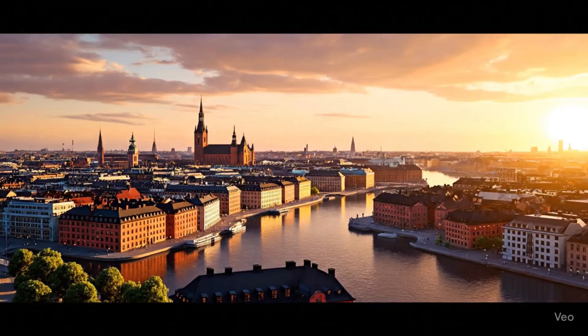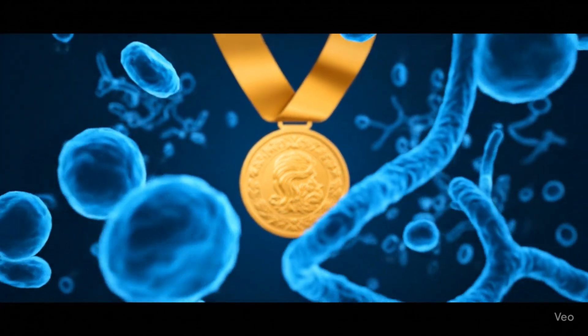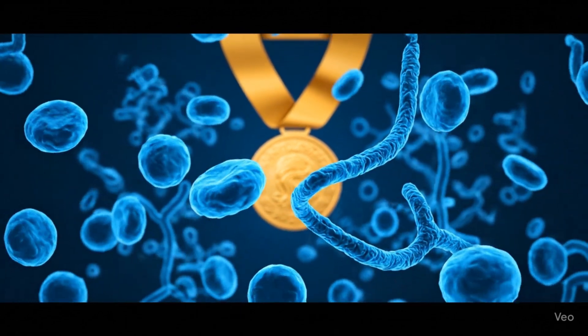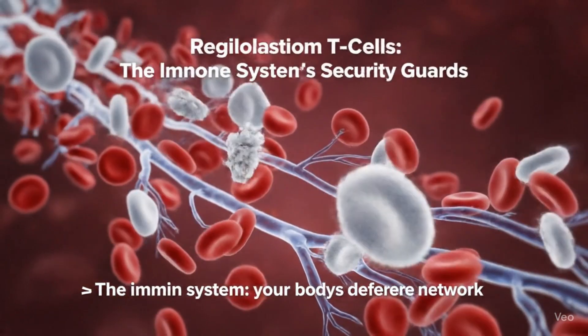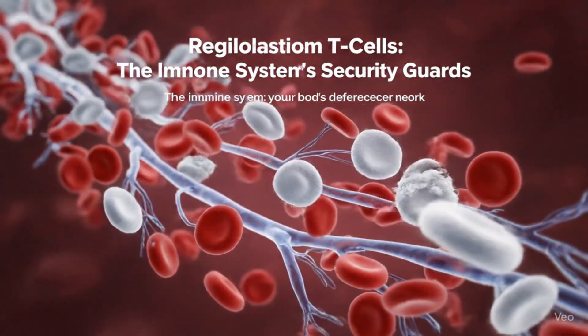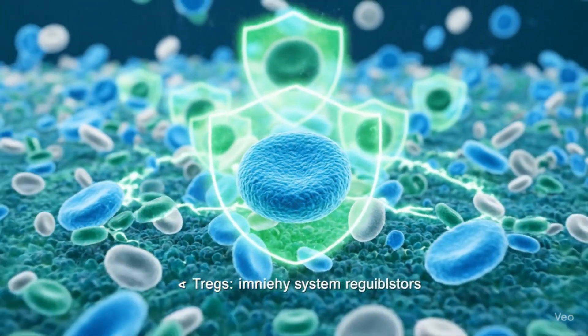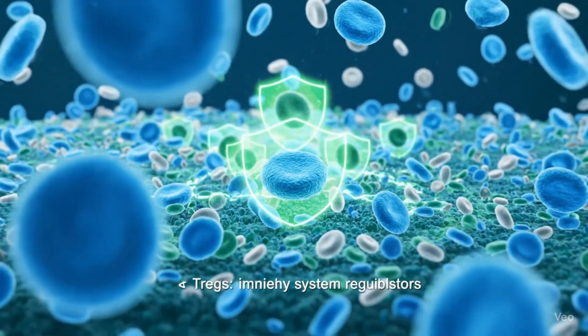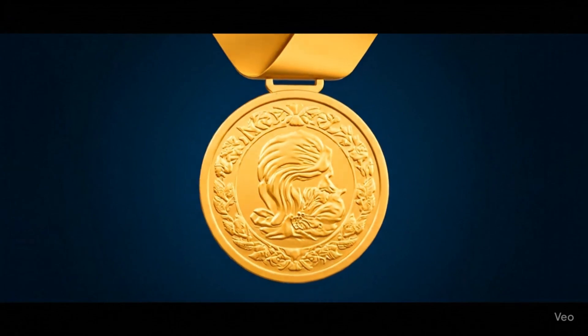So what exactly are T-regs? Think of your immune system as a powerful army, always on the lookout for invaders like bacteria and viruses. But sometimes that army can get confused and start attacking your own body. This is what happens in autoimmune diseases such as type 1 diabetes, rheumatoid arthritis, or multiple sclerosis.